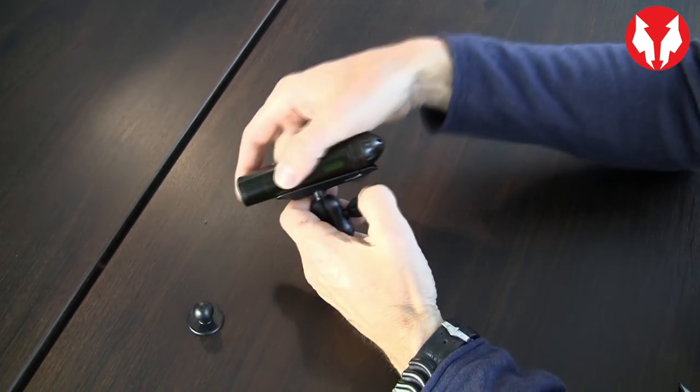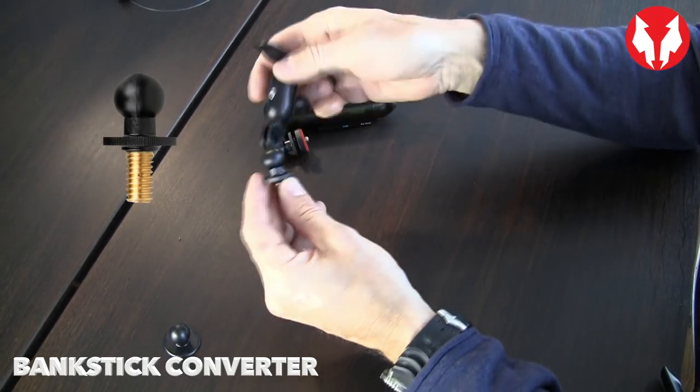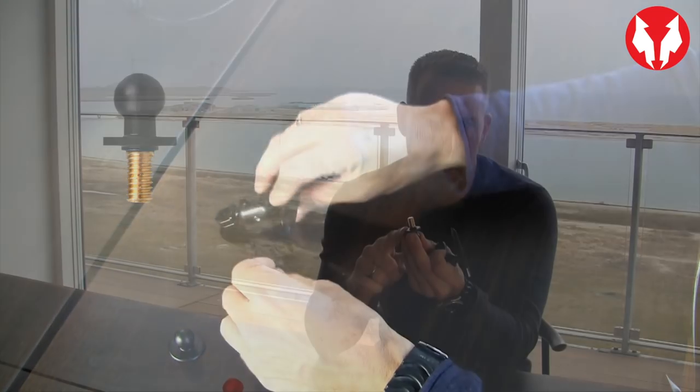The mount itself has a very cool knee joint here and it fits the GoPro universal mount. You can also add a bank stick converter so you can basically put this at the end of a bank stick or a landing net shaft.